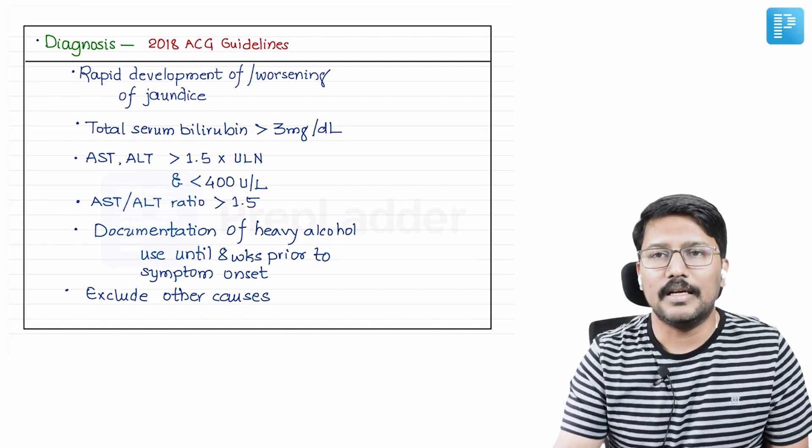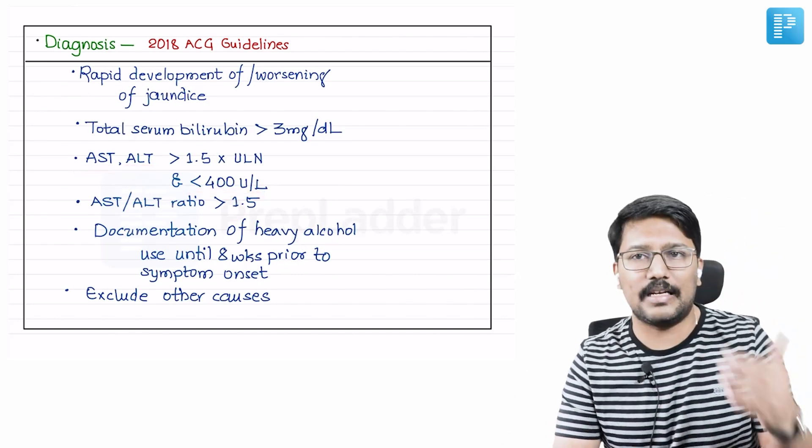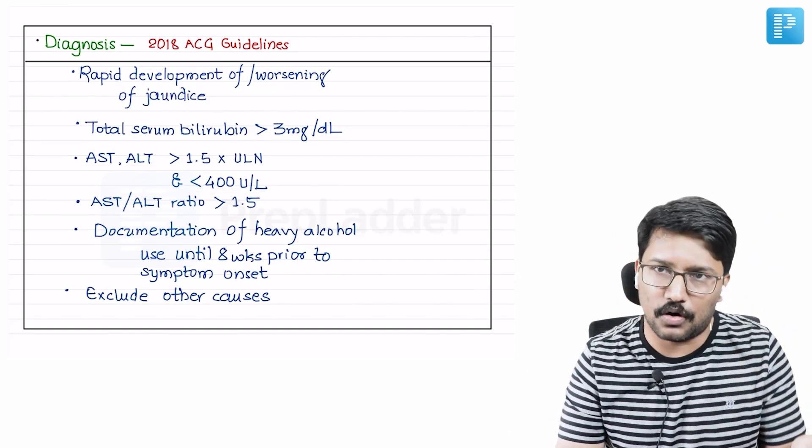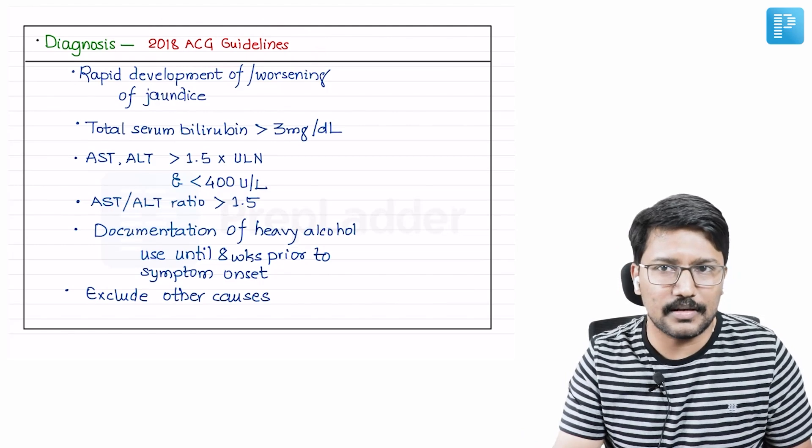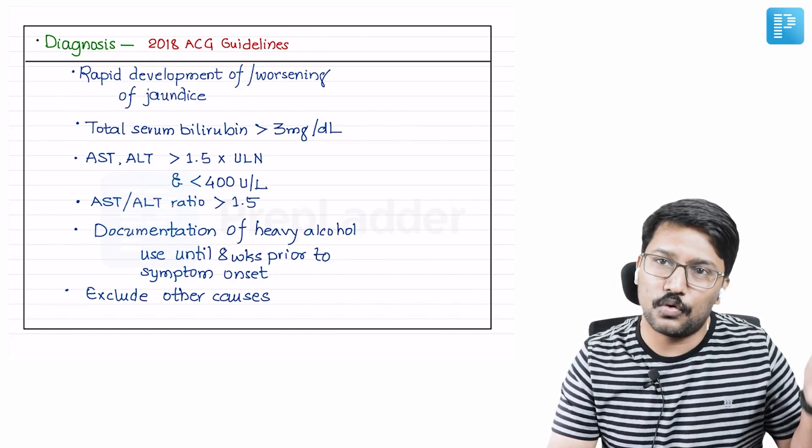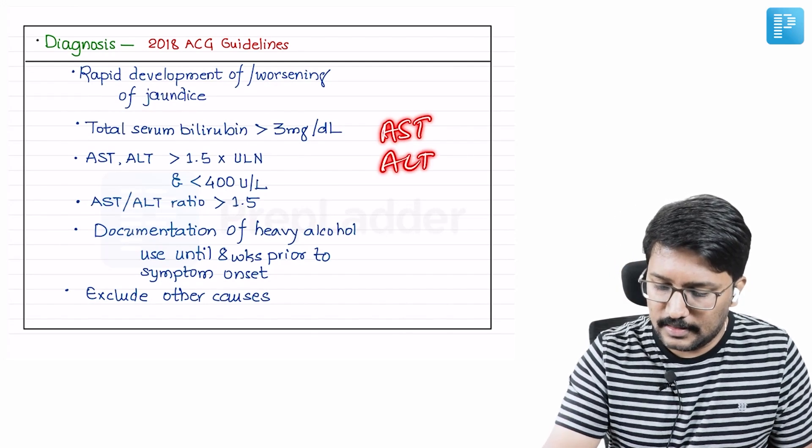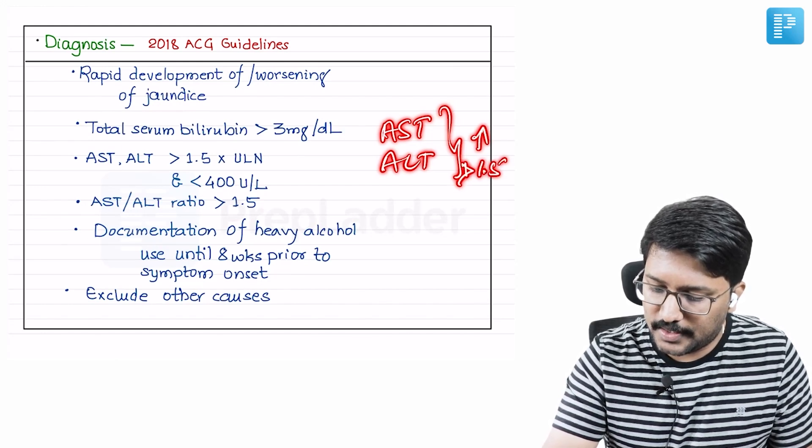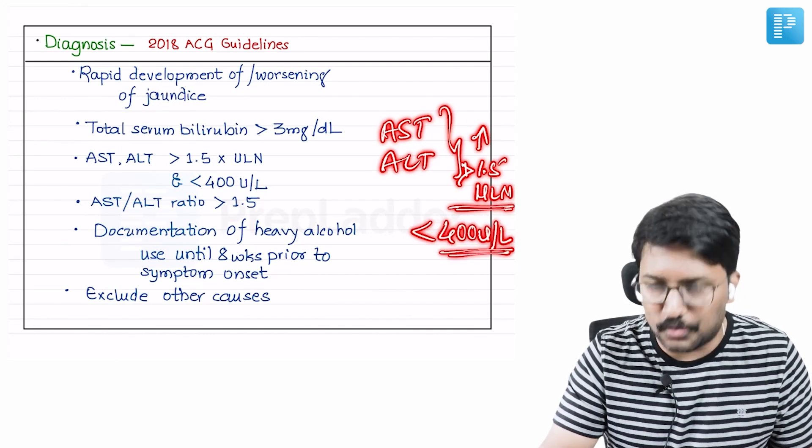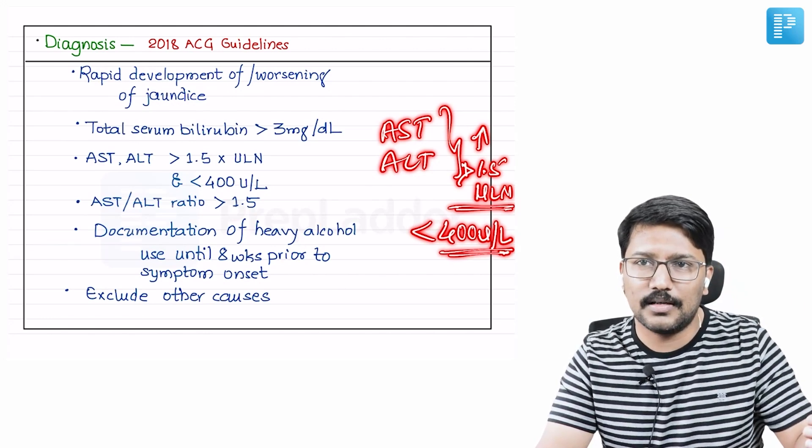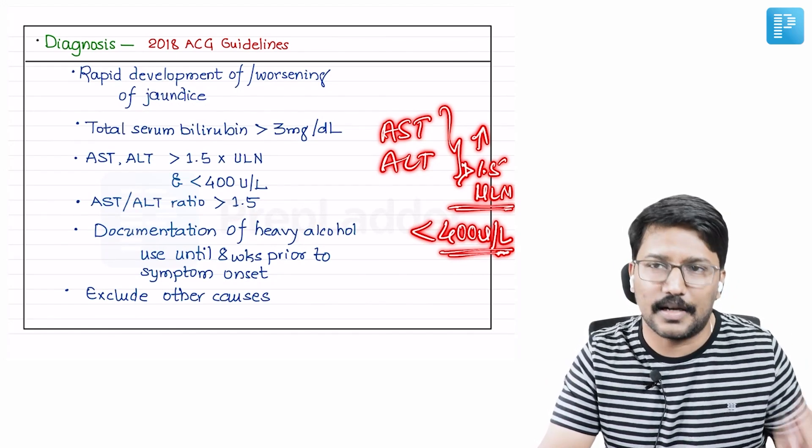Then comes the question of AST and ALT elevation. Here is what we need to particularly pay attention. When you look at AST and ALT elevation in alcoholic hepatitis, it is elevated - definitely more than 1.5 times the upper limit of normal. That is the bare minimum required according to the diagnostic criteria. But the majority of them have a relatively significant increase. But the values are usually not in the range we see in acute viral hepatitis or ischemic hepatitis. So that is something we should keep in mind. AST and ALT are usually elevated more than 1.5 times the upper limit of normal, but they're usually less than 400 units per liter.